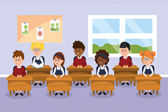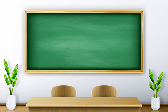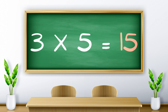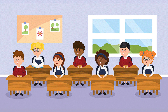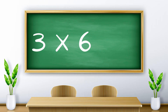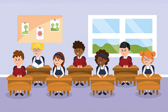Three fours are twelve. Three fives are fifteen. Three sixes are eighteen.